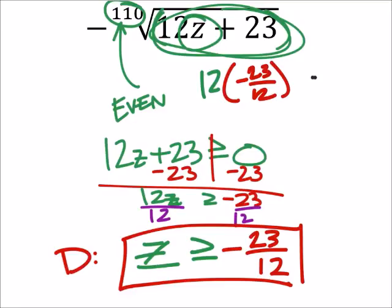Well, 12 times negative 23 twelfths, the twelfths just cancel out, which leaves us with negative 23 plus the 23. This is all square rooted, by the way.